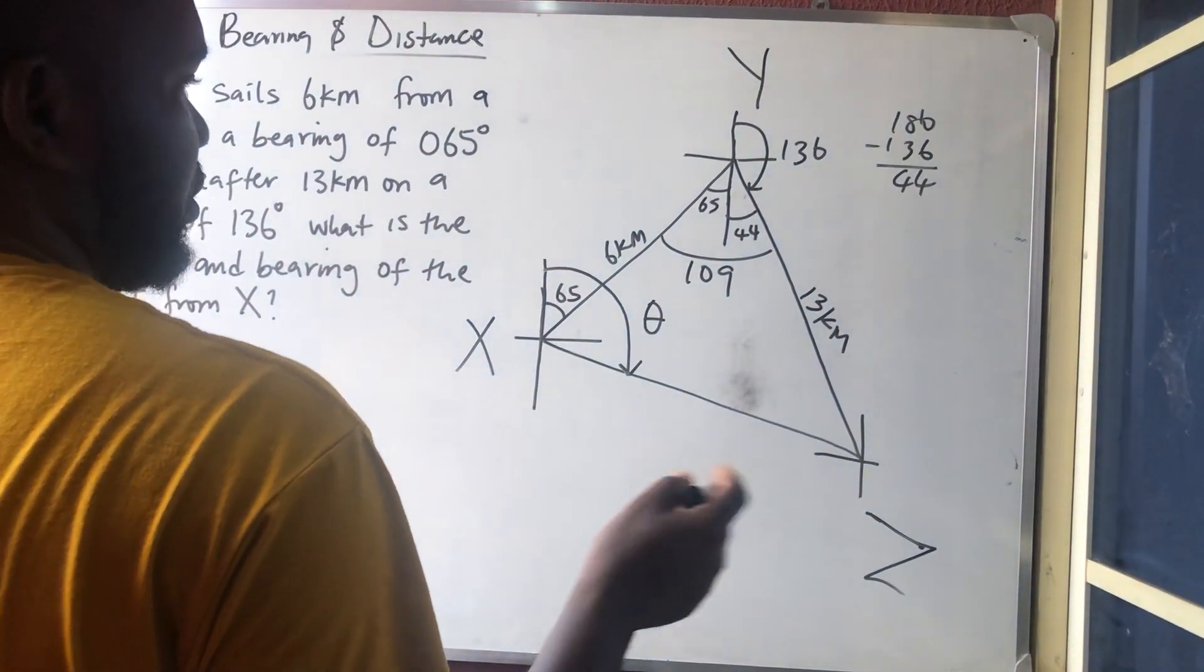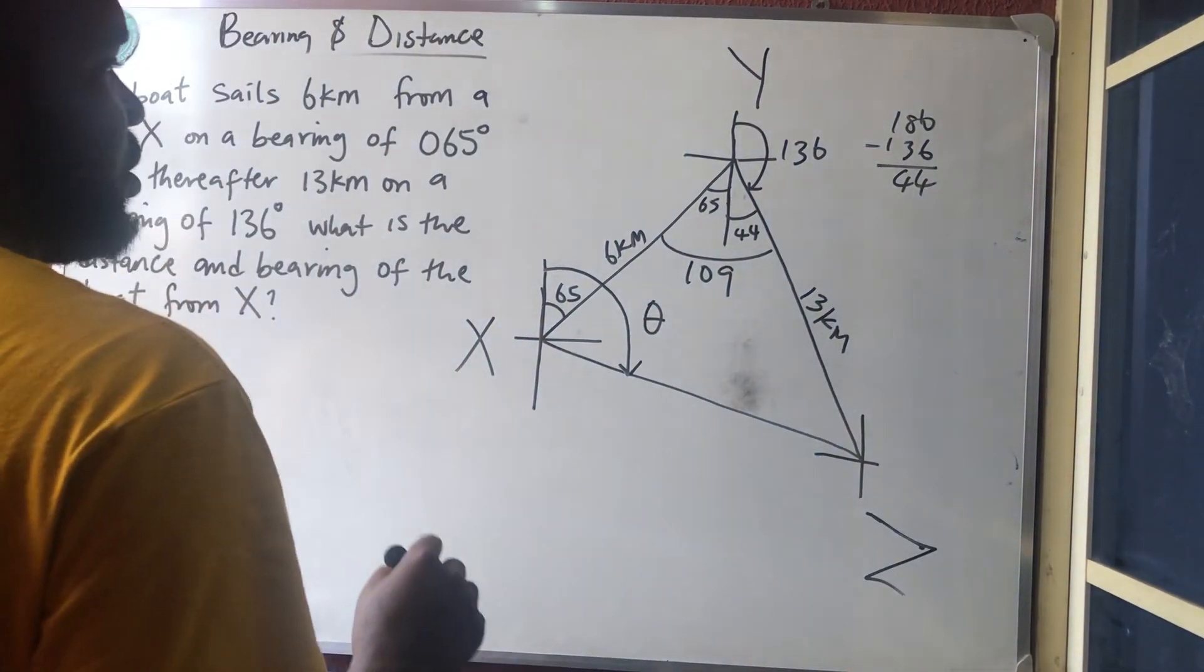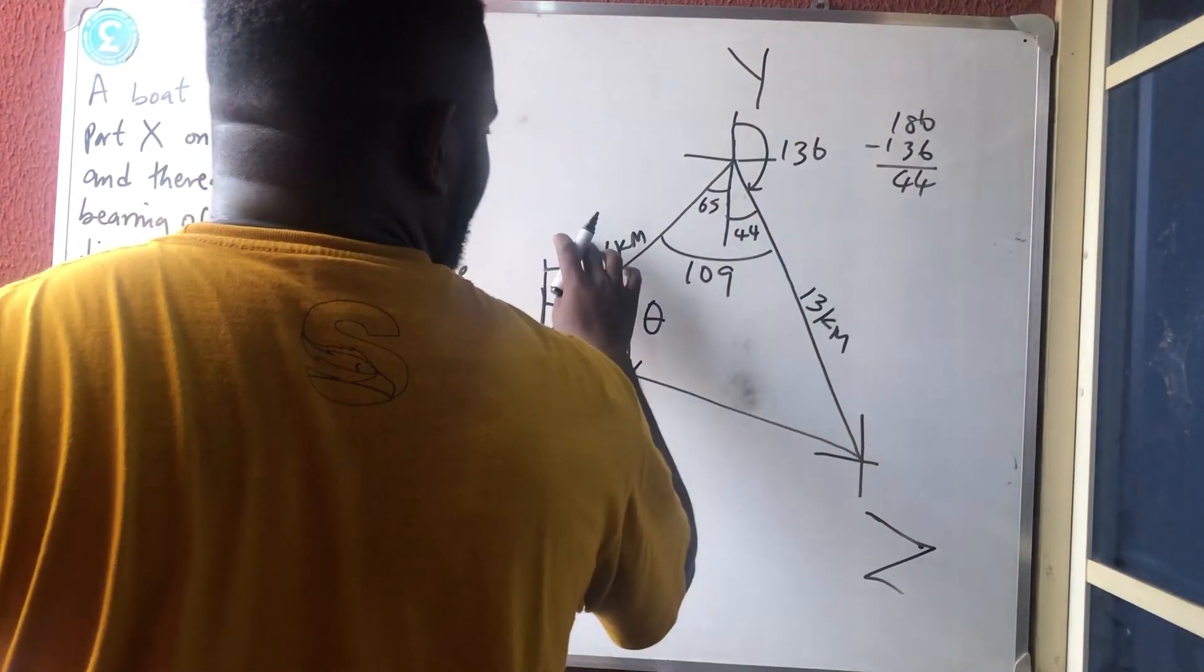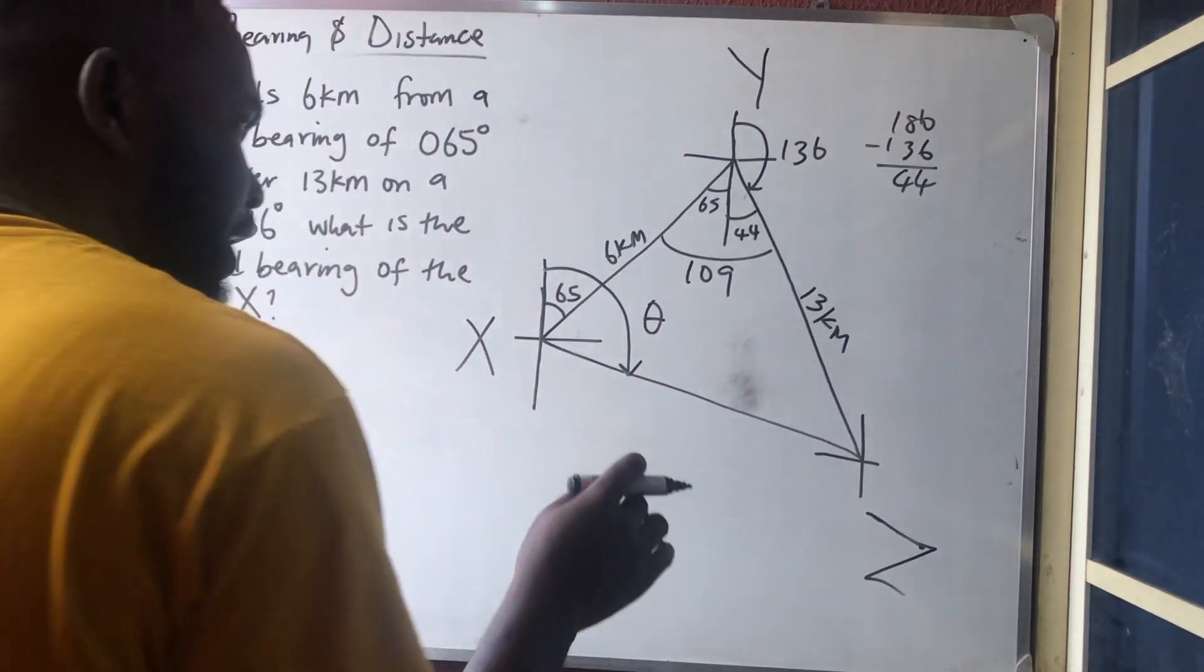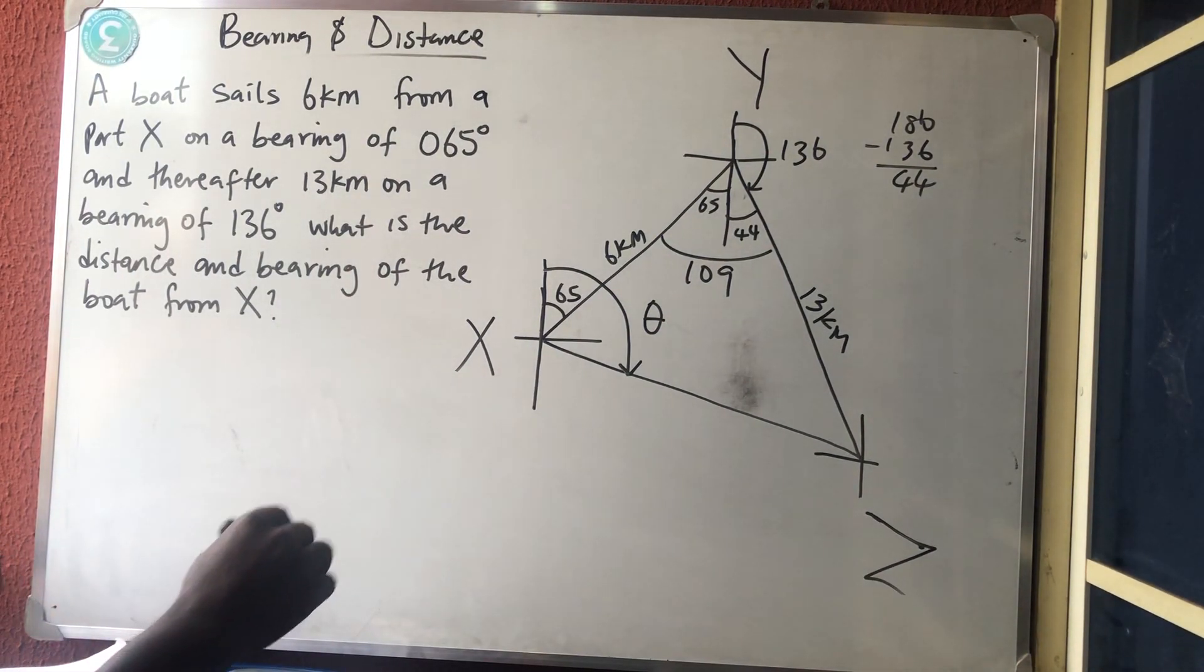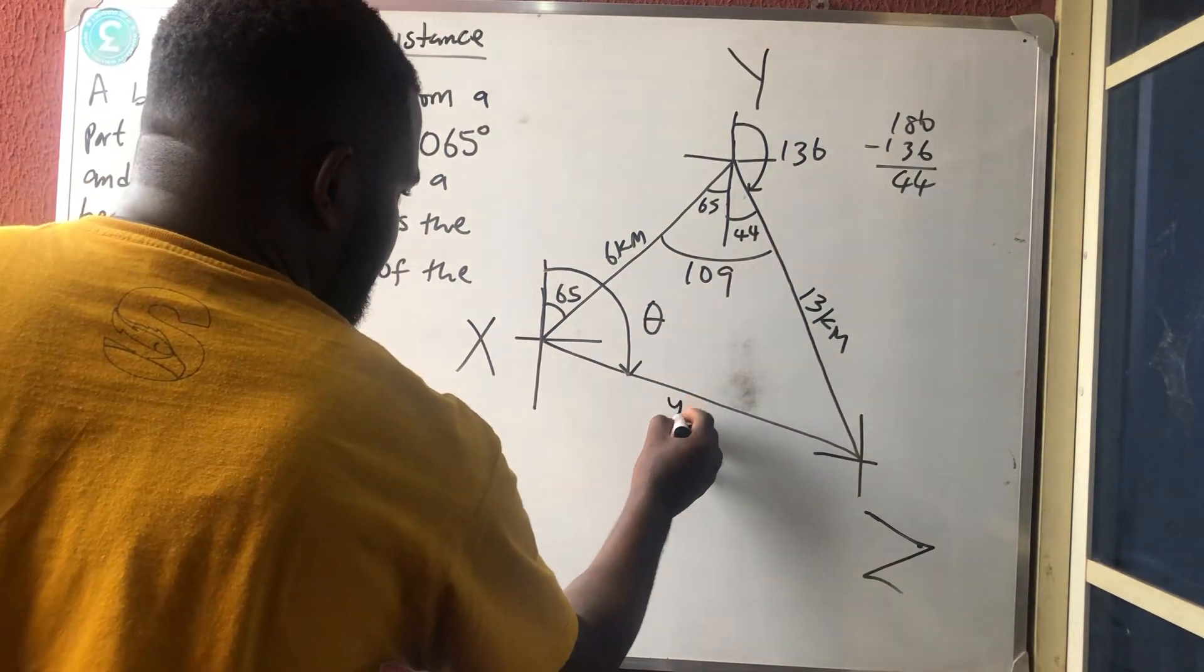So the distance is from here to here. And once they gave you two sides and one angle in between the two sides, what do you use? Cosine rule. Don't forget, according to what I taught you in trigonometry.